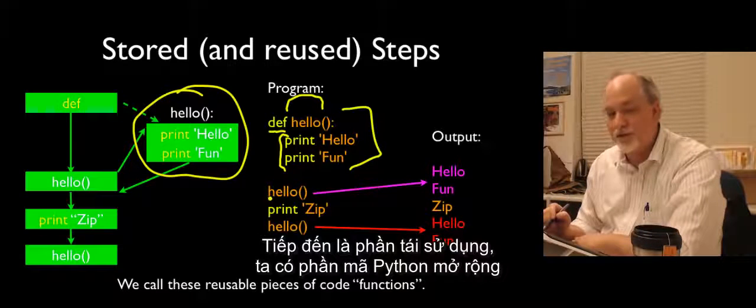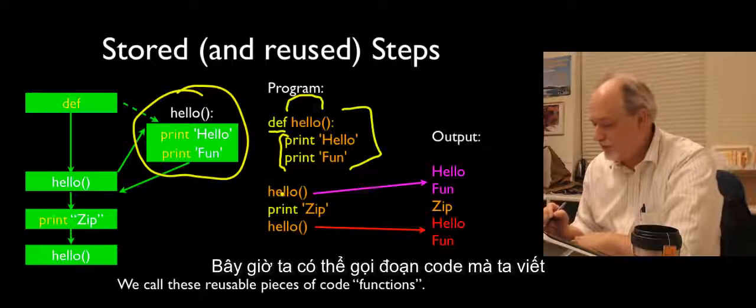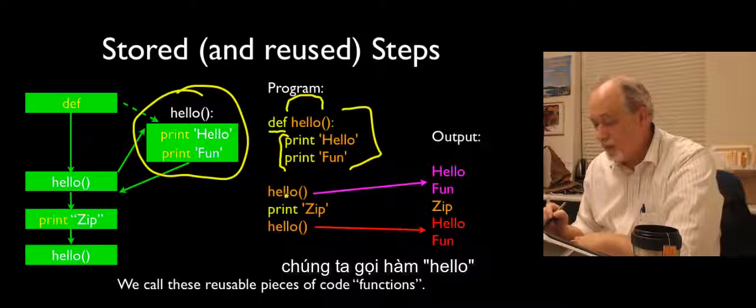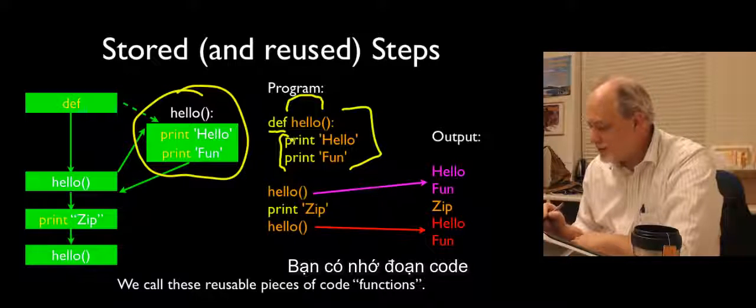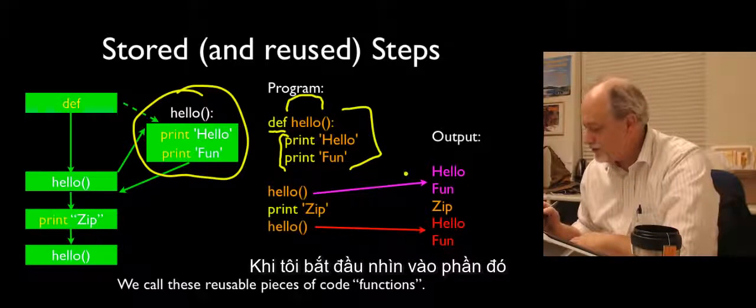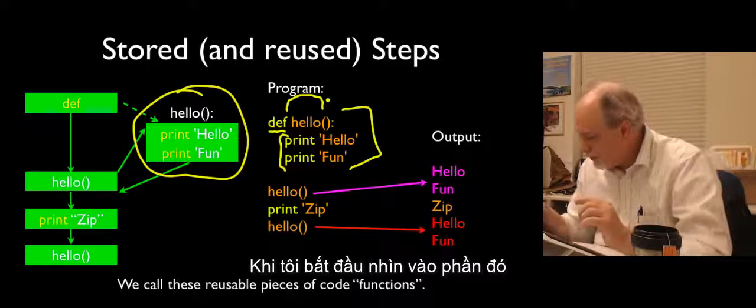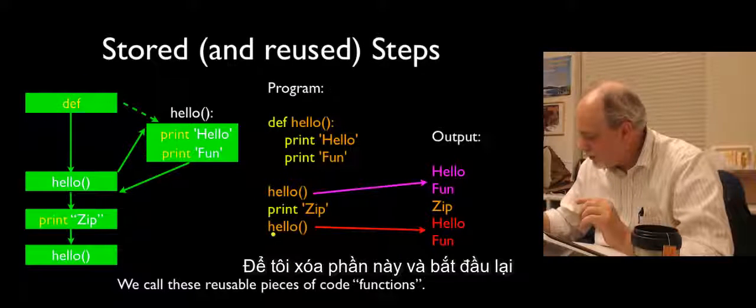So, this is the store part. And then the reuse part is we then have extended Python. We now can call our bit of code. So, we say hello. Hello name is what we came up with. Parenthesis. And then that says, remember that code that I put in there under the name hello? Run it now. And so, if I start looking at that and then it just continues.